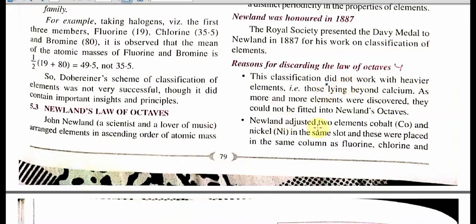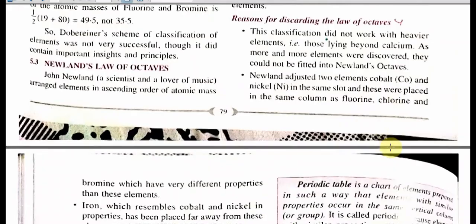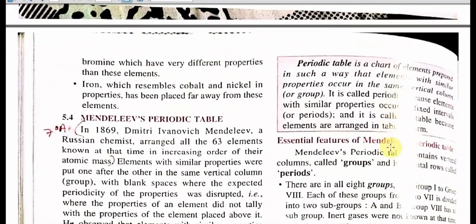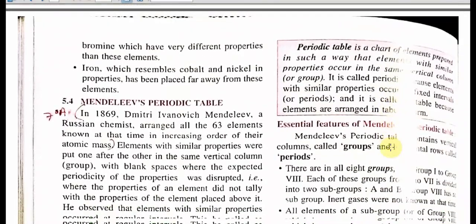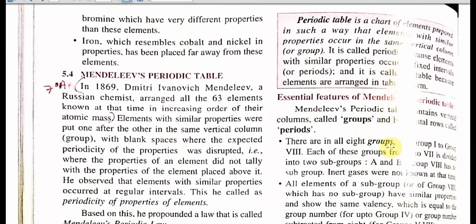Newland adjusted two elements, cobalt and nickel, in the same slot, and these were placed in the same column as fluorine and chlorine. But cobalt, nickel, and iron are actually metals, while fluorine and chlorine are not metals. So these were a few reasons prominent enough to discard the rule.